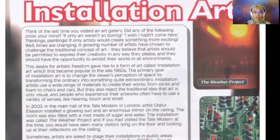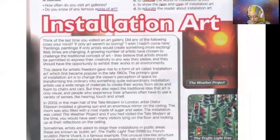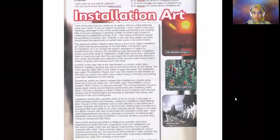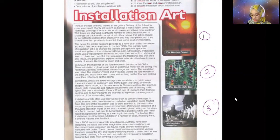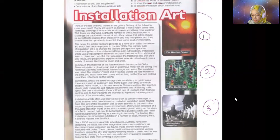Before we go to the reading, look at the textbook. We have three pictures: the Weather Project, the Traffic Light Tree, and the Melting Men. Weather means cuaca, tree means pokok, and melt means cair. We're not yet sure what melting men looks like, but these are all arts related to installation art. After we do the reading, we will understand all three of these arts.